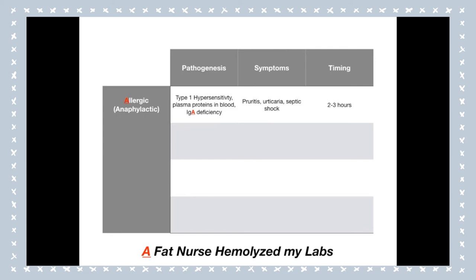The second type of transfusion reaction is the febrile non-hemolytic type — F in fat for febrile and N in nurse for non-hemolytic. This is a type 2 hypersensitivity that occurs when host antibodies react against the donor's white blood cells. Cytokines in the blood accumulate during storage in the blood bank, causing this massive response. Symptoms are fever, headache and flushing. Note the name carefully: febrile tells you there will be fever, and non-hemolytic tells you there is no hemolysis — this differentiates it from the hemolytic reaction.